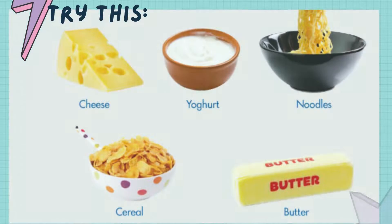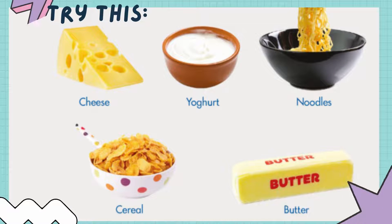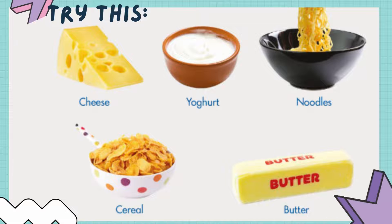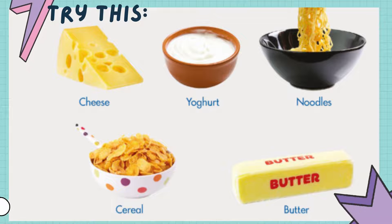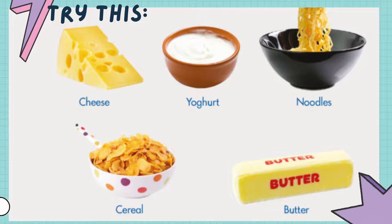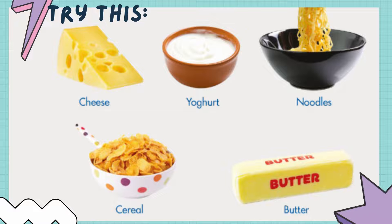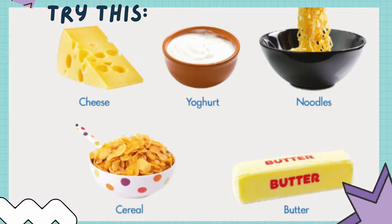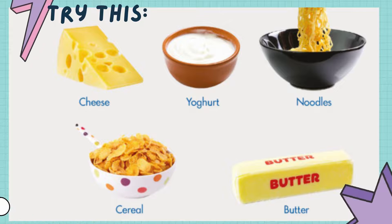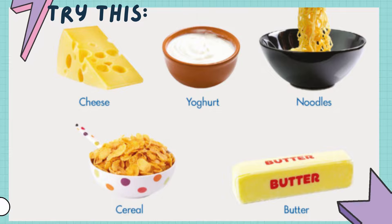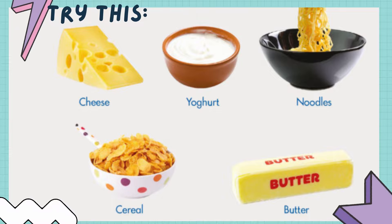Now it's your turn. I want you to try this: cheese, yogurt, noodles, cereal, and butter. I want you to write which of these comes from animals and which of these foods come from plants.